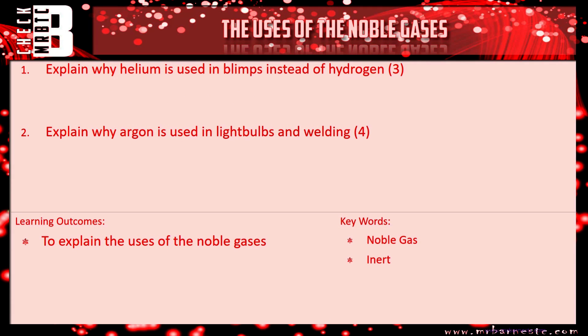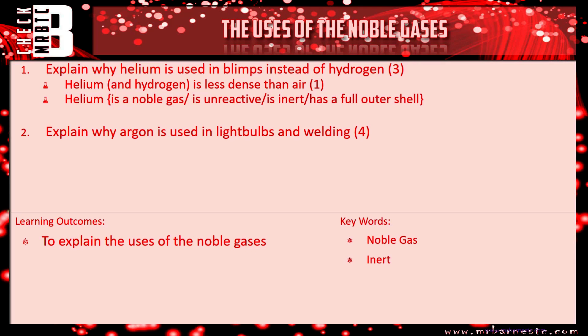Right, let's go through and see how you've done. Starting with helium — why it's used in blimps instead of hydrogen. First, talk about the property useful for both: they are less dense than air. Second, talk about what is different: helium is a noble gas, it's unreactive, it's inert, it has a full outer shell — I'd be putting all of those in. And then finally, therefore it will not set on fire or explode. That's how you get your three marks.